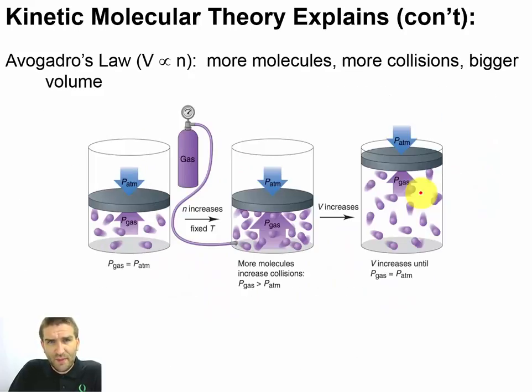Now, there's a fourth thing that kinetic molecular theory will help us explain, and that's Avogadro's law. And that's saying that volume is proportional to the number of moles. So PV equals nRT, or relating number of moles to volume.